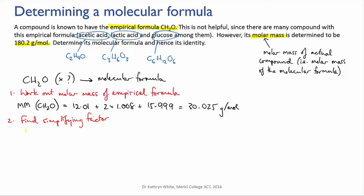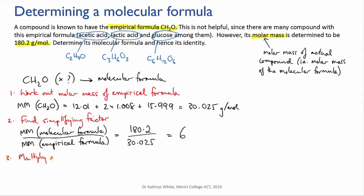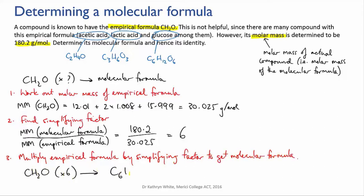Now we'll take the true molar mass, 180.2, and divide it by the molar mass of the empirical formula, and this equals 6. That means that the molecular or true formula was divided through by 6 to give the empirical formula. So we reverse that process and we get that the true formula is C6H12O6, which is the formula for glucose.